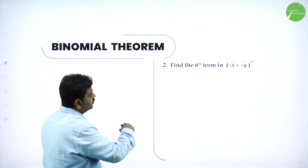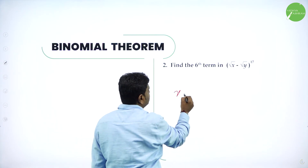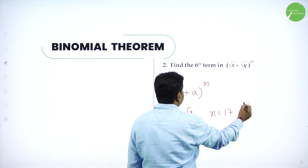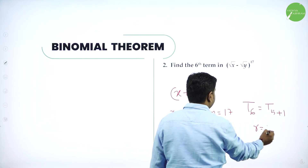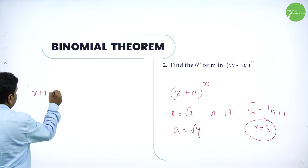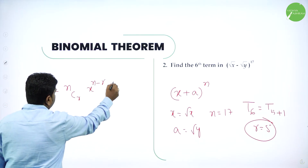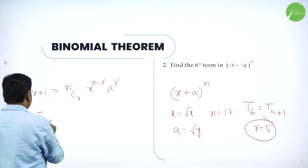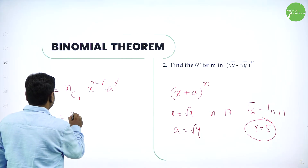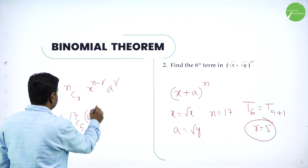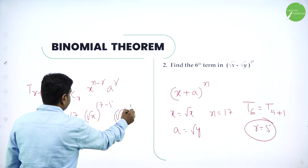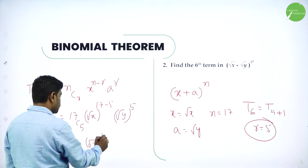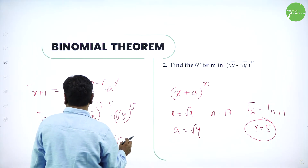Next problem: find the 6th term in the expansion of root x minus root y whole power 17. It is in the form x plus a power n. By comparison: x is root x, a is minus root y, and n is 17. They want the 6th term, so T6 equals T(5+1), meaning r is 5. Use the formula T(r+1) equals nCr times x power n minus r times a power r. T(5+1) equals 17C5 times root x power 17 minus 5 times root y power 5.